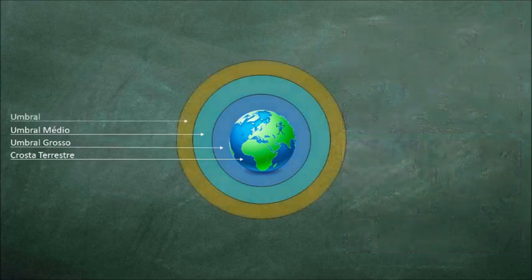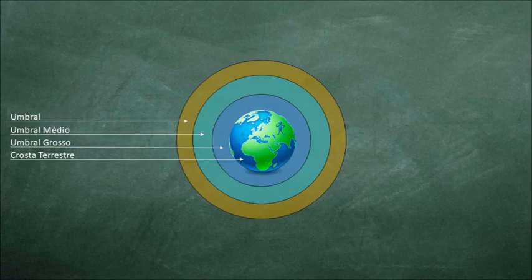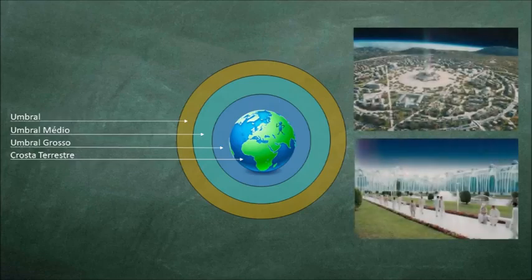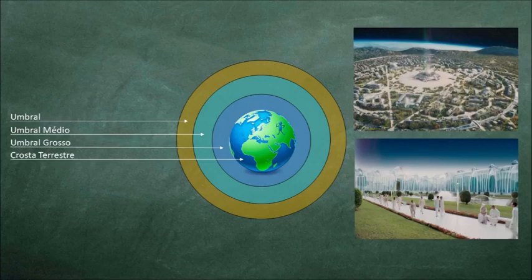O plano seguinte é chamado simplesmente de umbral. Nele ainda existe uma forte influência da matéria sobre o espírito, porém seus habitantes vivem em mais harmonia e fraternidade. Nesse plano a luz e o bem já são dominantes e suas paisagens são verdadeiros paraísos terrestres. É nesse plano que se encontram diversas cidades astrais, como a cidade de nosso lar, tema do livro de Chico Xavier, psicografado pelo espírito André Luiz, sendo mais tarde, tema do filme de mesmo nome.